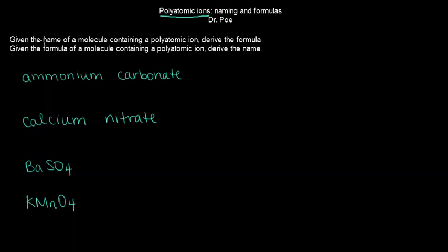Okay, so for the purposes of this, if you can recognize a polyatomic ion, that's enough. So if you're given the name of a molecule containing a polyatomic ion, you should be able to derive the formula. Or if you're given the formula, you should be able to derive the name. Okay, so let's go through some examples of this.